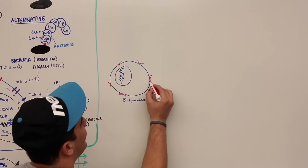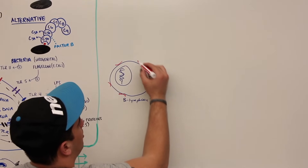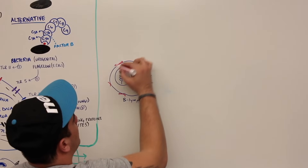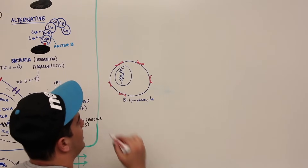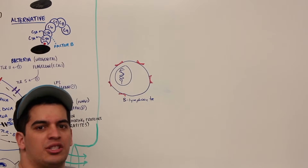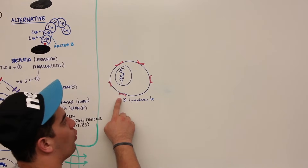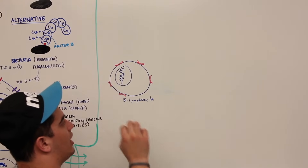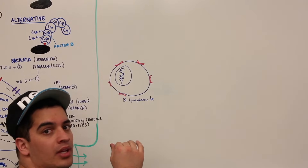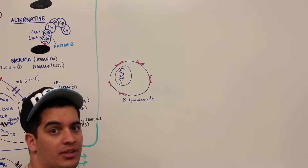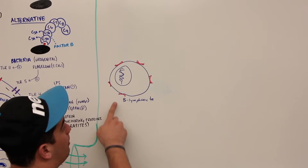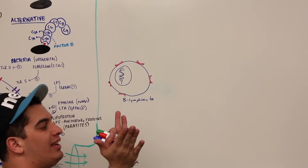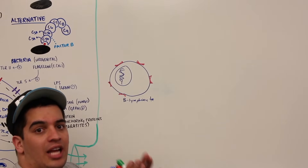These receptors are called B cell receptors. B cell receptors are usually designed to be antibodies — a specific type called IgD antibody, which we'll talk about in a separate video. These B cell receptors are formed in a very special way: they undergo recombination. The DNA inside the B cell can undergo shuffling, producing different types of B cell receptors with different binding domains so they can bind different types of antigens.